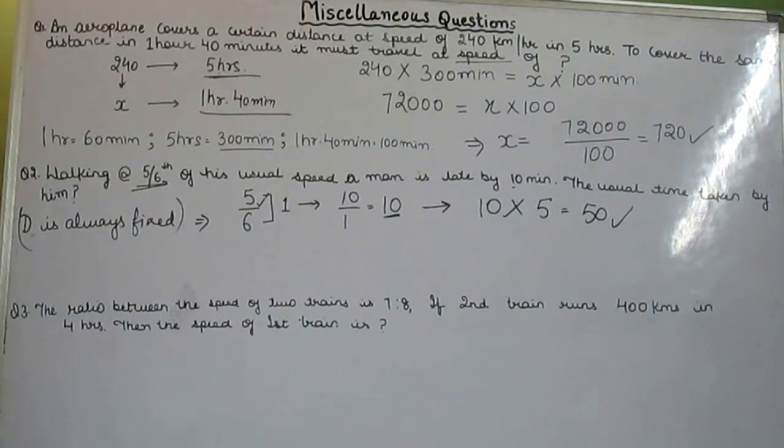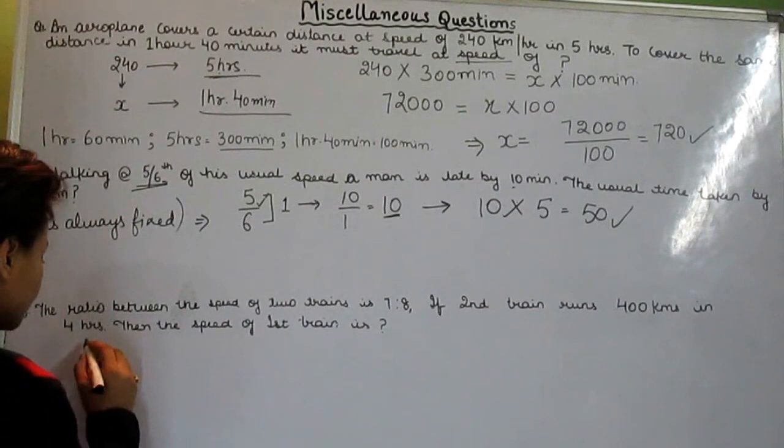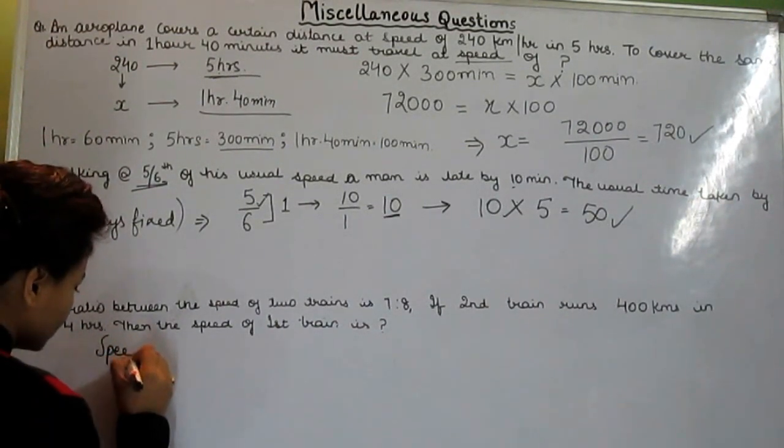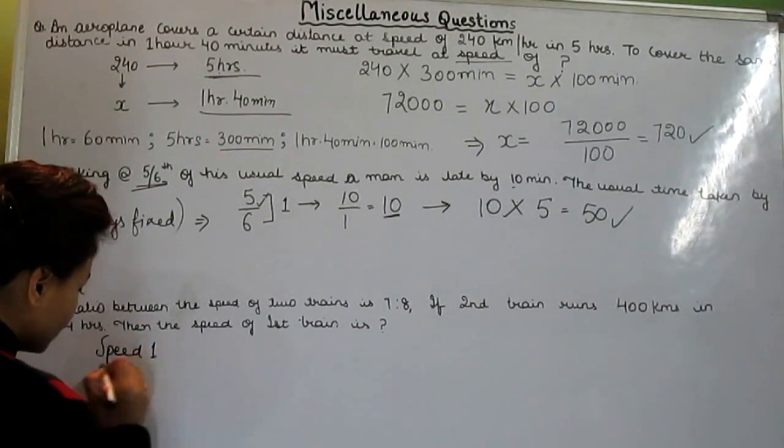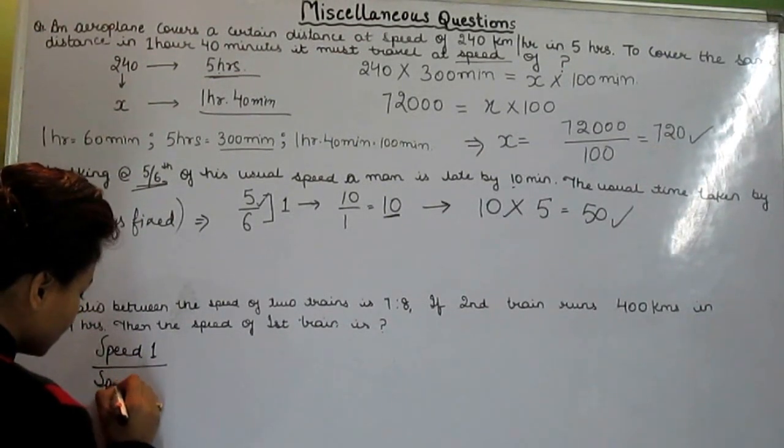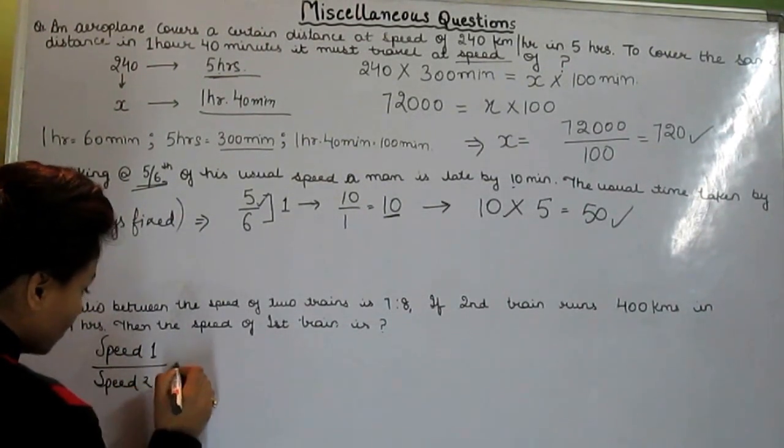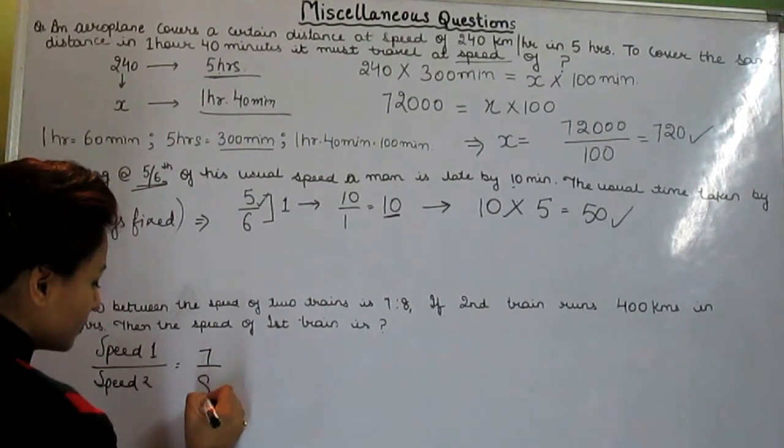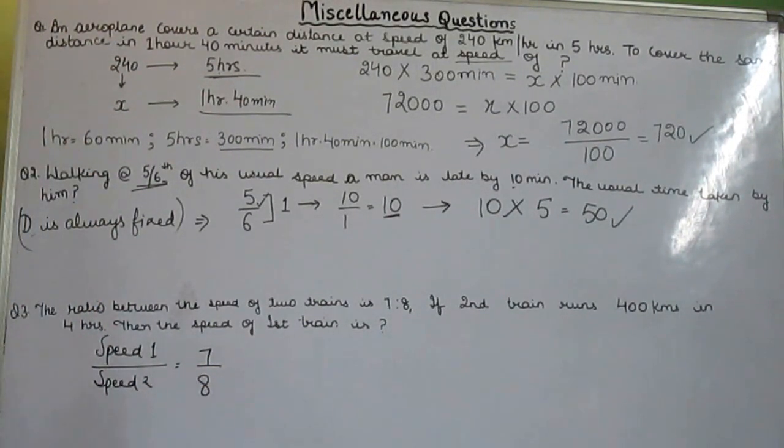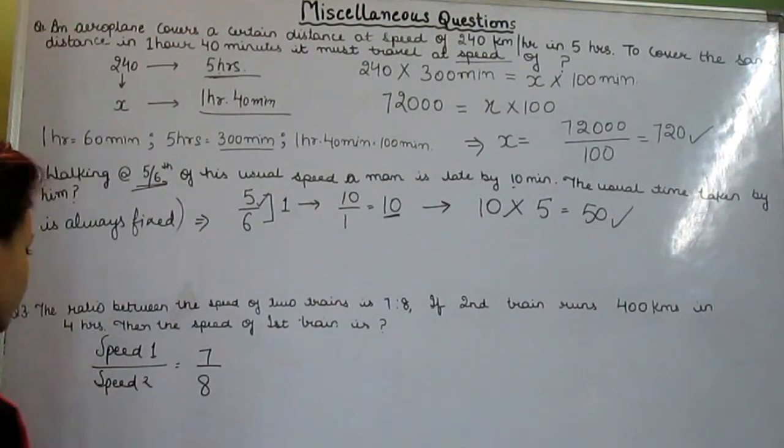Third question is: the ratio between the speed of 2 trains is 7 ratio 8. If second train runs 400 km in 4 hours, then the speed of first train is what? Speed 1 by speed 2. What is given? That is 7 and 8. And if second train runs 400 km in 4 hours.